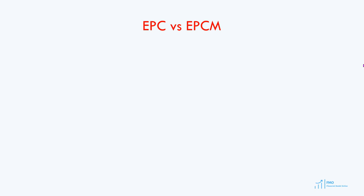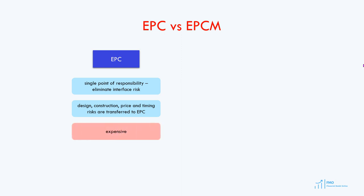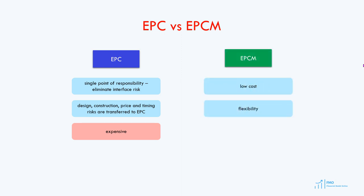In summary, the advantage of the EPC contract is a single point of responsibility, which eliminates the interface risk present when there are many contractors. All major risks are allocated to the EPC contractor. The main disadvantage of the EPC contract is its price — since the contractor takes on nearly all construction risks, it will include significant contingencies in the contract price. The main advantages of the EPCM contract are low cost and flexibility; however, from a risk allocation standpoint, the main risks remain with the project company.